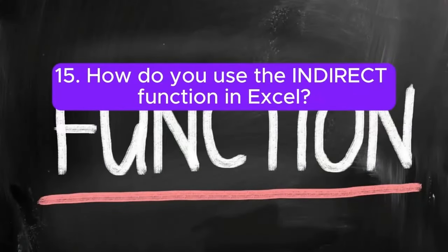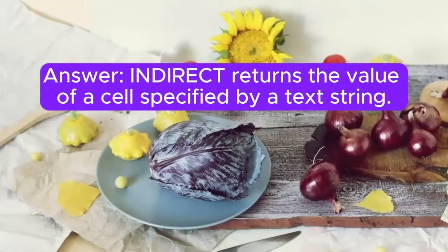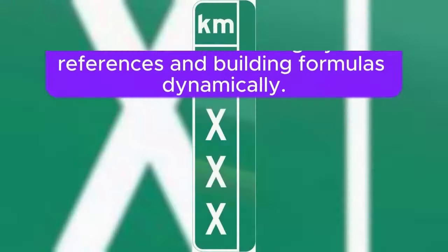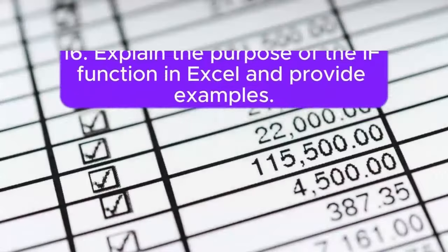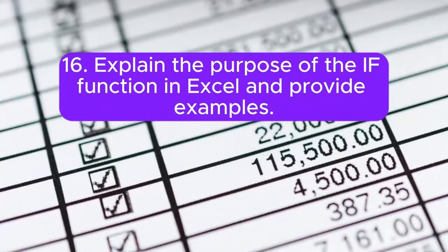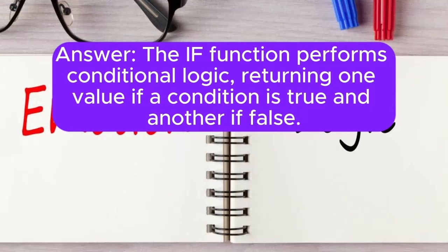Question 15: How do you use the INDIRECT function in Excel? INDIRECT returns the value of a cell specified by a text string. It is often used in creating dynamic references and building formulas dynamically. Question 16: Explain the purpose of the IF function in Excel. The IF function performs conditional logic, returning one value if a condition is true and another if false.